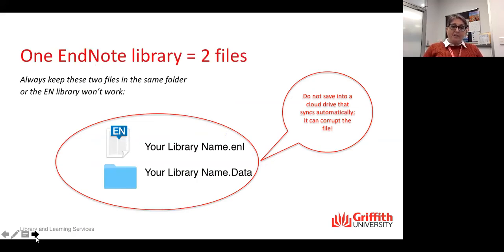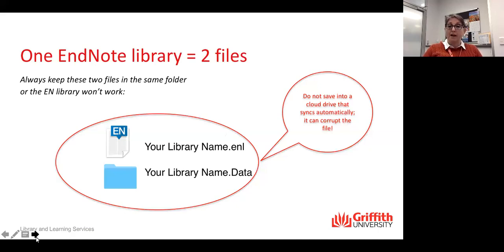An EndNote library consists of two files — you need to always keep these two files together. We recommend creating a new folder and putting both files into it so one doesn't disappear; otherwise you're looking for either the ENL or the data file. You cannot save this library in a cloud or on a network — it needs to be on the hard drive of the computer. It doesn't sync properly on a network or cloud drive, and eventually it can corrupt the file.